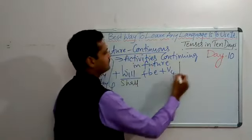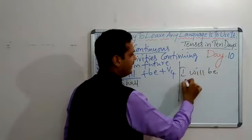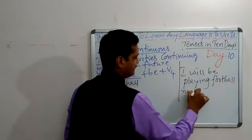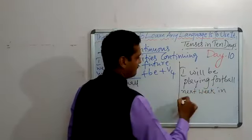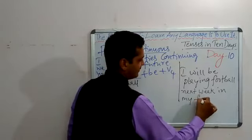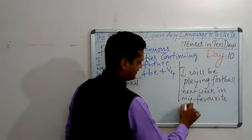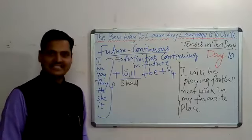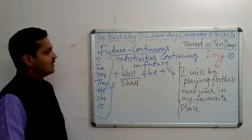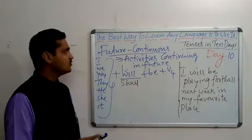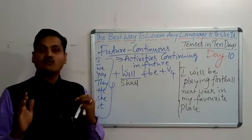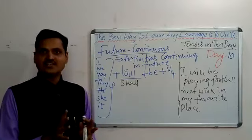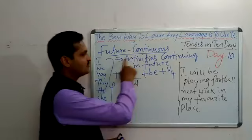Example: I will be playing football next week in my favourite place. We can use many other examples also. We also use future continuous tense for all the activities which are happening for sure. Like: I will be travelling to my hometown next week. Whichever activity is happening for sure, for those activities also we use future continuous tense.